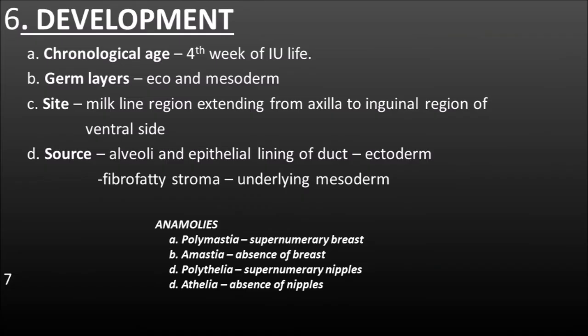The last before section is the development of the mammary gland. Mammary gland was developed in the fourth week of intrauterine life. The germ layers are the ectoderm and the mesoderm. It was developed in the region of the milk line which extends from the axilla to the inguinal region of the ventral side of the body. The epithelial lining of the duct and alveoli are developed from the surface ectoderm and the fibro-fatty stroma is developed from the underlying mesoderm. Regarding anomalies: polymastia means supernumerary breast; amastia refers to absence of breast; athelia refers to absence of nipple; and polyathelia refers to more number of nipples.